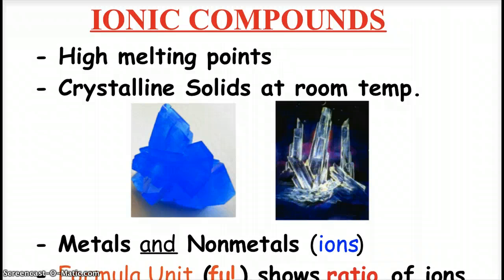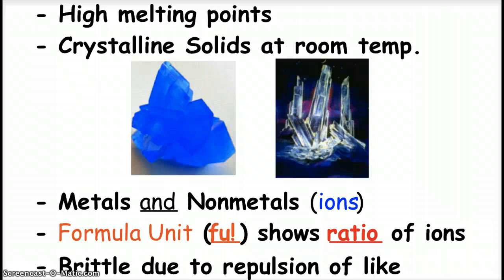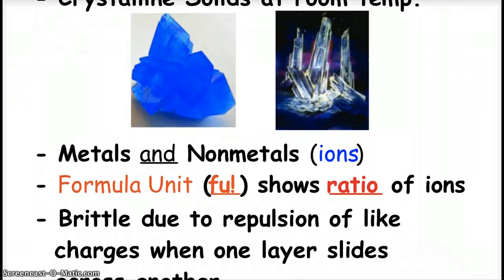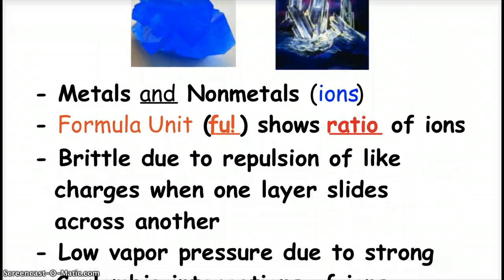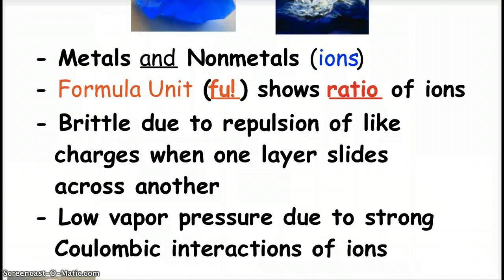Typically, you see metals and non-metals in the compound, because we need to have the opposite ion charges being held together. Our formula unit, our FUs, show the ratio of ions. Again, we talked about the fact that they are brittle due to the repulsion of like charges when a layer will slide across another, and then that's why they fracture pretty easily, and they have good, what's called cleavage in the mineral fracturing world.